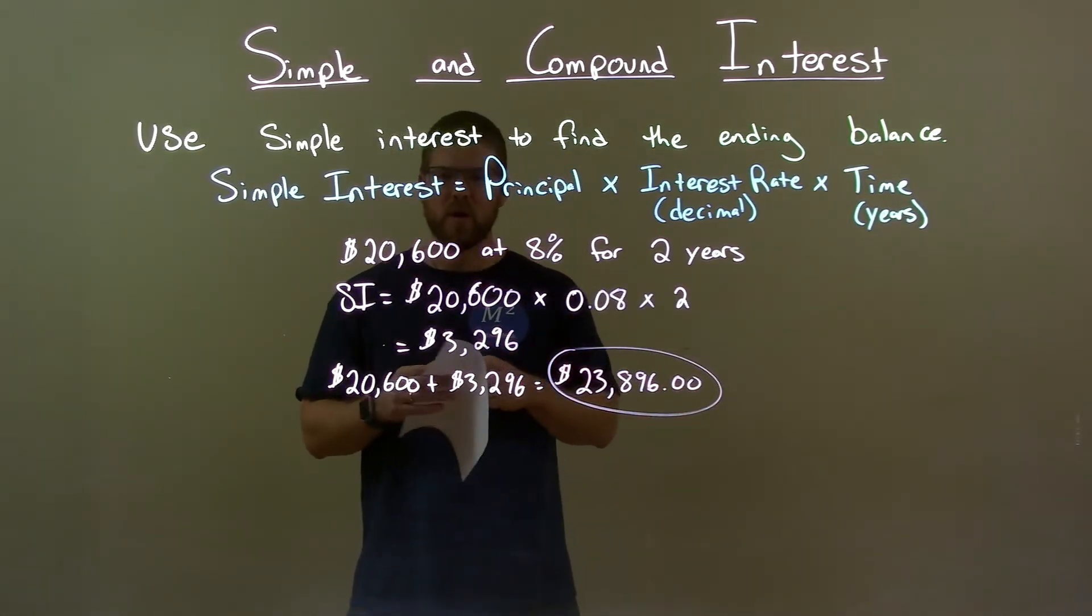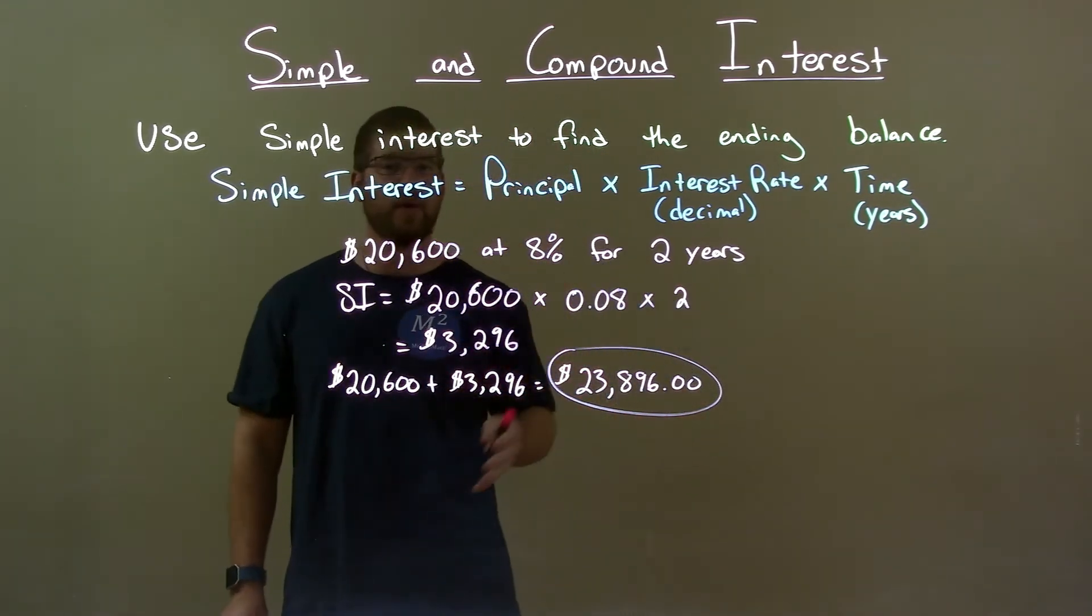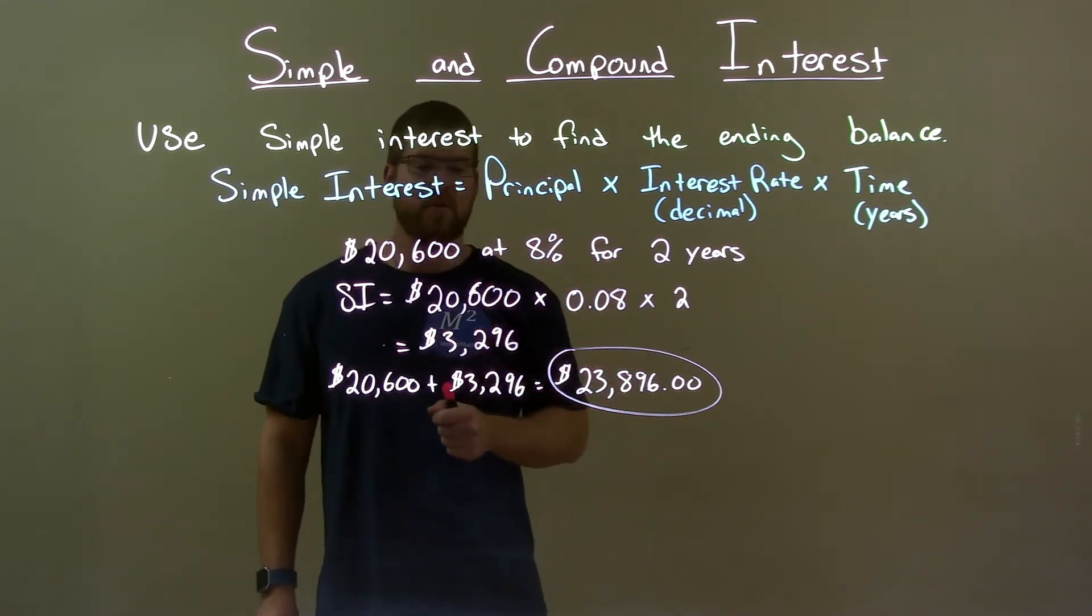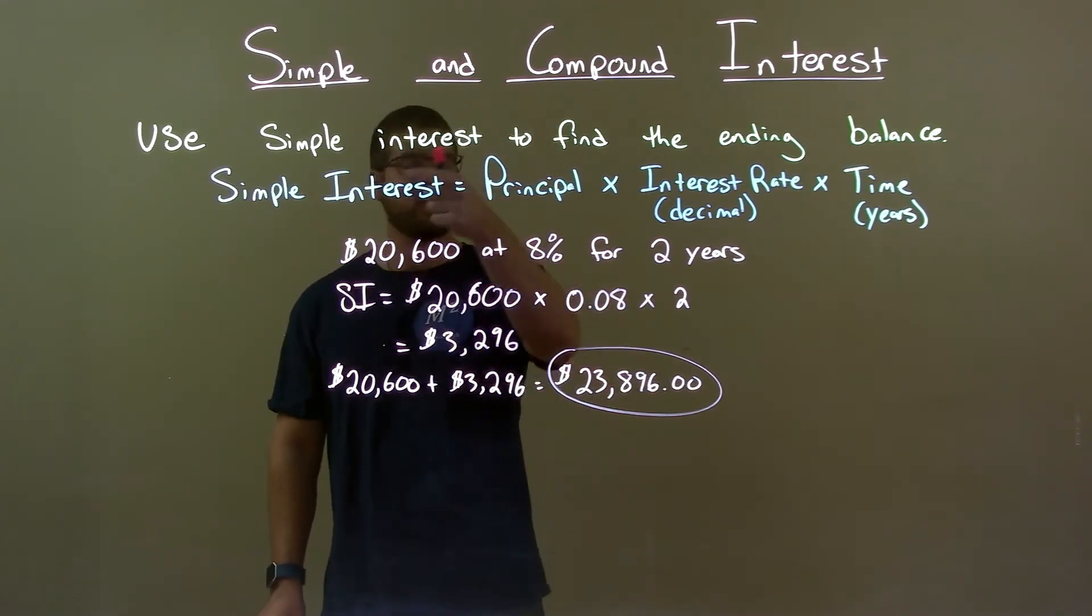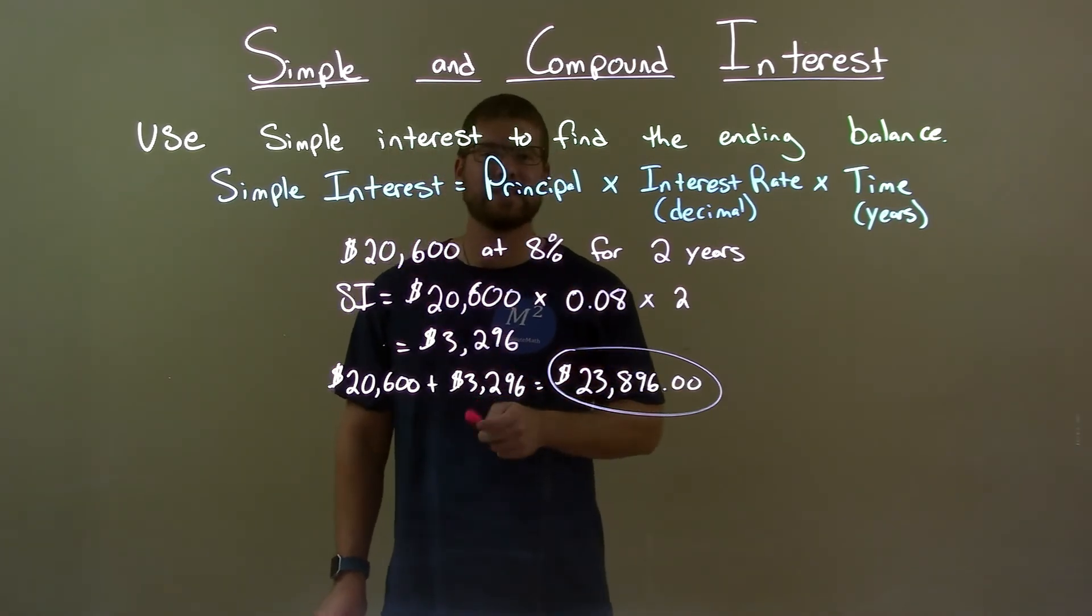Quick recap. We're given $20,600 at 8% for 2 years and we define the ending balance when using simple interest. Our simple interest came out to be $3,296. Add that to our principal to get a final answer of $23,896.